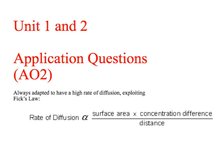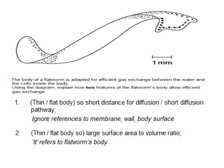Interestingly, you can use Fick's Law - and I would always use Fick's Law - if you get some weird or wacky cell or organism that you have to explain how it's adapted to have a high rate of diffusion. For example, a flatworm: how is it adapted to have efficient gas exchange? It's got a thin body, so a short diffusion distance, and a large surface area to volume ratio because it's thin. So that's two ways you can use Fick's Law to explain its efficient gas exchange.